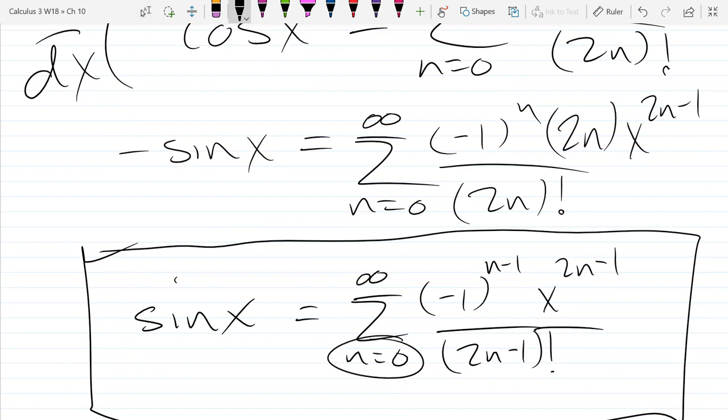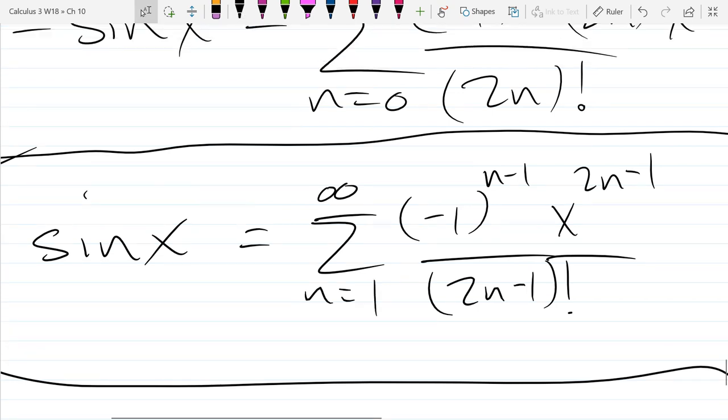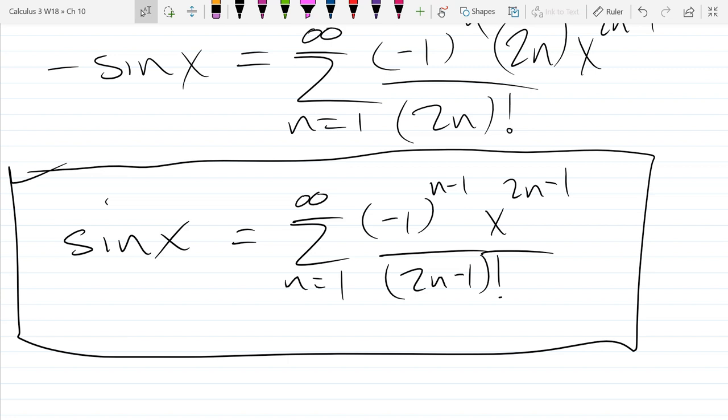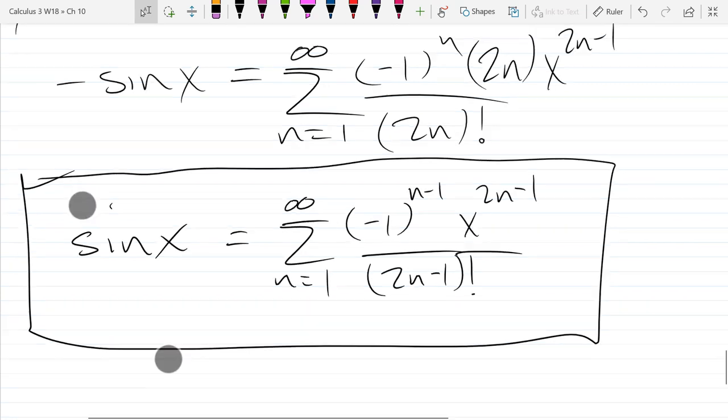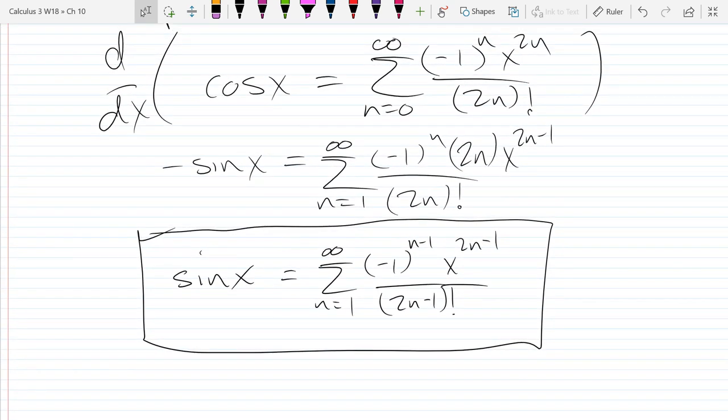All right, there's still one problem with this. What's wrong with starting at 0? What do I get if I plug in 0? I get x to the negative first power. That's not a polynomial term. This needs to be a polynomial. So when you take a derivative, I think I talked about this last section, but you bump up your starting n by 1. This doesn't affect the interval of convergence. It will affect the sum it actually converges to.